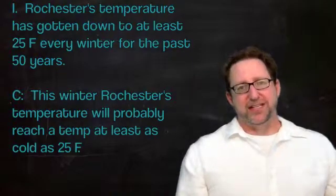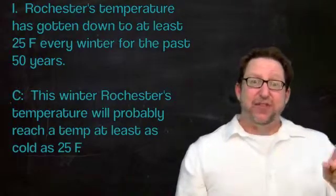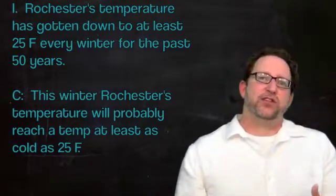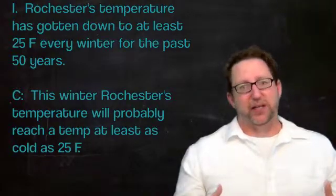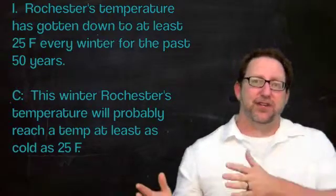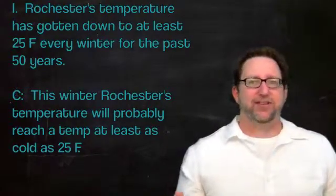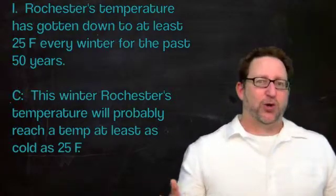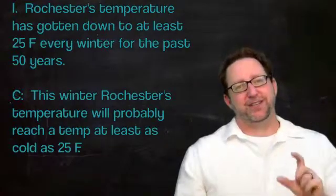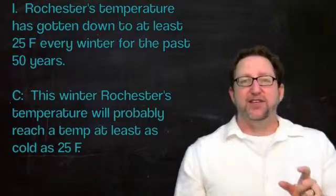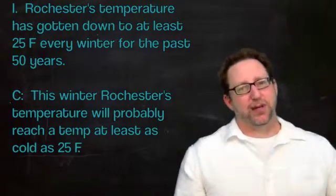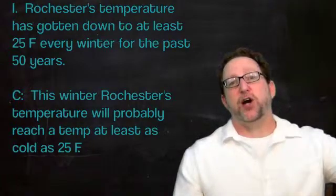Now, as it turns out, the logic of this inductive argument is pretty good. If that premise is true, it is indeed probable or likely that this winter will have a temperature that gets down to at least 25 degrees Fahrenheit. Fifty years of consistency with regards to the weather means that the weather systems are set up in such a way that we get cold weather. And so if the premise is true, the conclusion is likely to be true. It's probable. This tells us that this argument is strong. In other words, that inferential claim is strong. The conclusion really does follow from the premise.